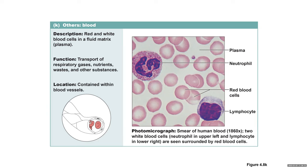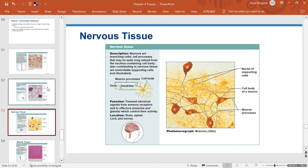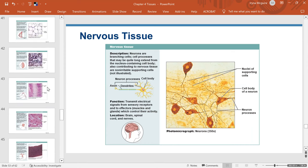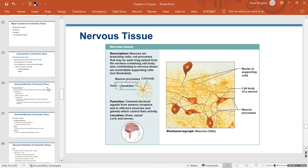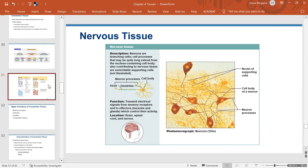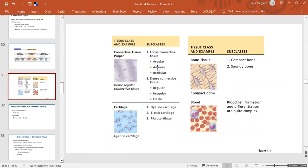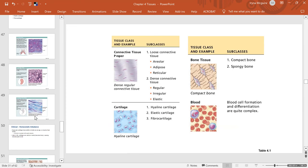Fluid connective tissue — blood: red and white blood cells in a fluid matrix called plasma. Function: transport of respiratory gases, nutrients, waste, and other substances. Location: contained within blood vessels. To recap what we have covered: connective tissue proper (areolar, adipose, reticular, dense regular, dense irregular, dense elastic), supporting connective tissue (cartilage and bone), and fluid connective tissue (blood). Next tissue type is nervous tissue.